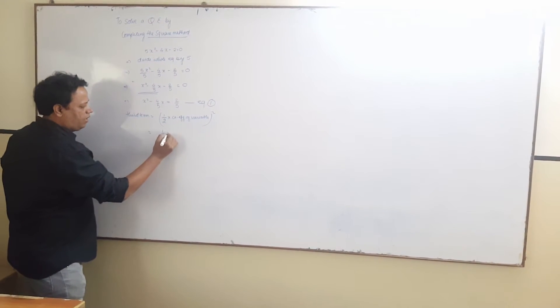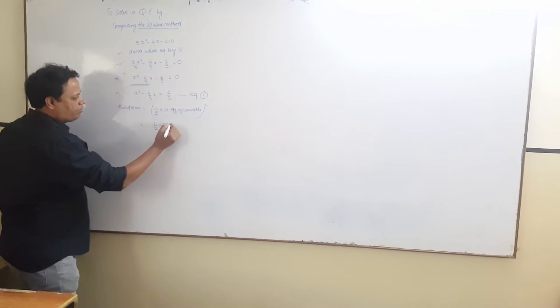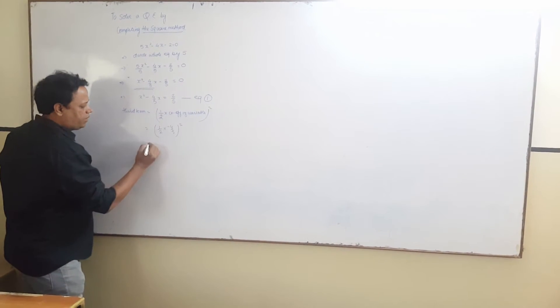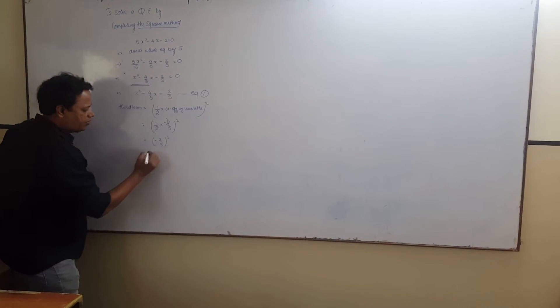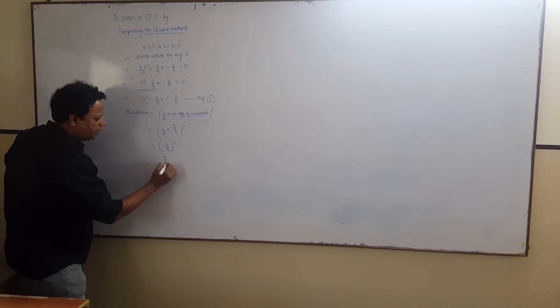what we might have, half multiplied by minus 4 upon 5 whole square. This will be minus 2 upon 5 square gives you 4 upon 25.